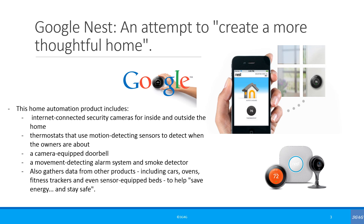This example of home automation is a programmable thermostat that learns what temperatures you like, turns itself down when you're away, and can be controlled from anywhere over Wi-Fi. Users can log onto their Nest accounts and change the temperature, view and adjust their schedule or settings, and see exactly how much energy they are using.